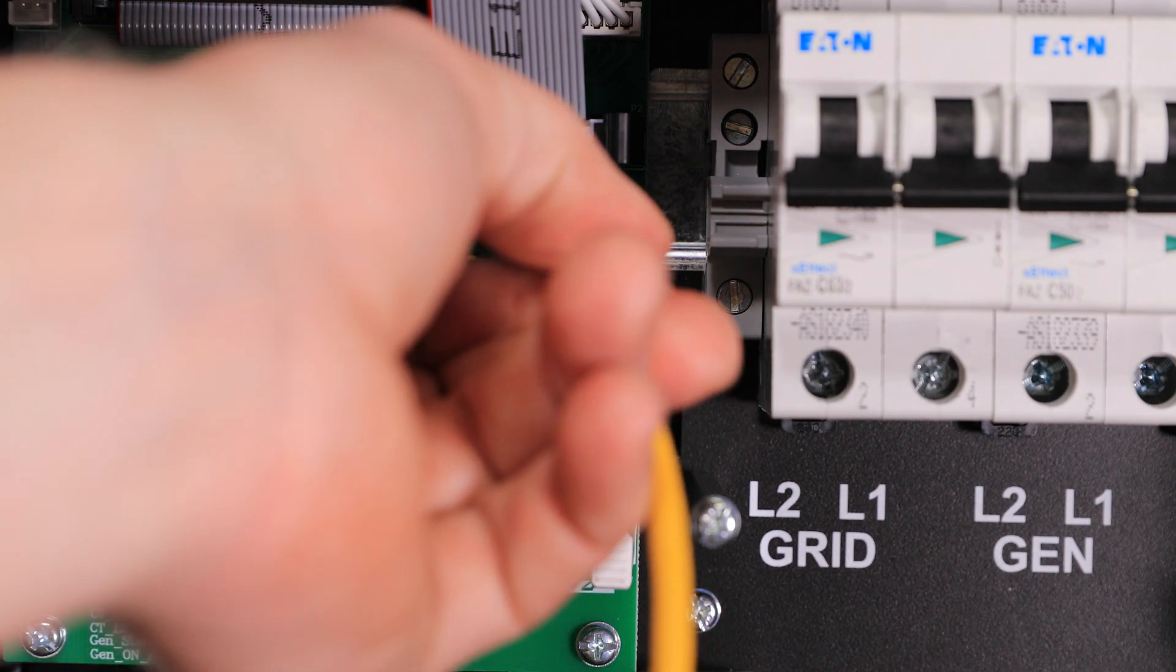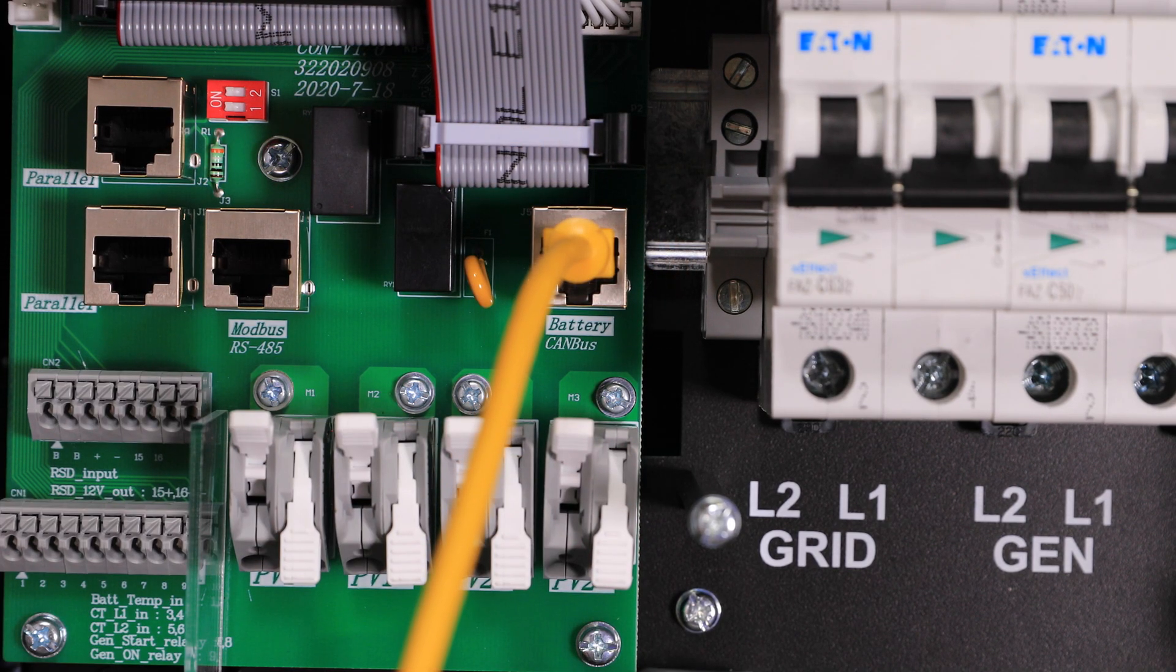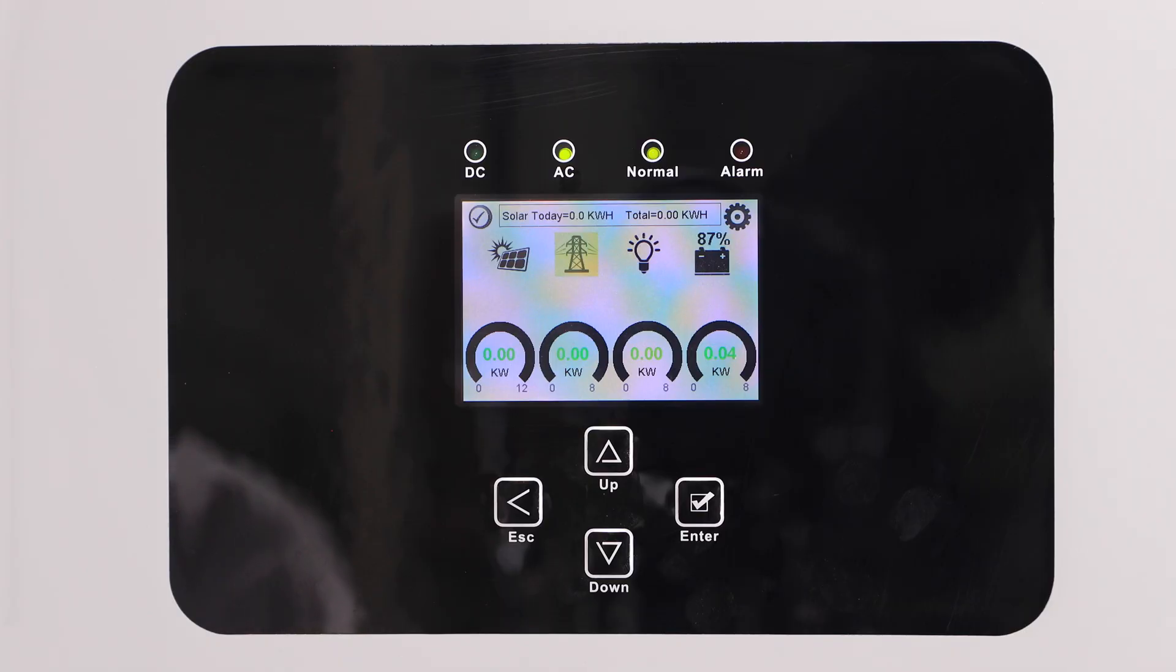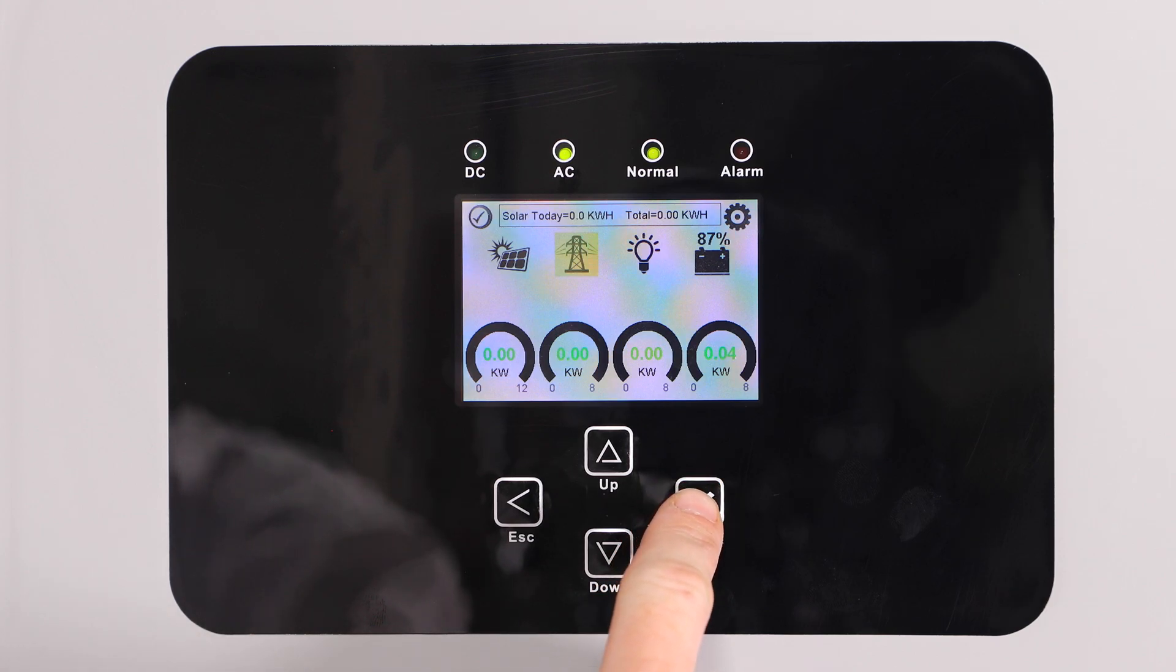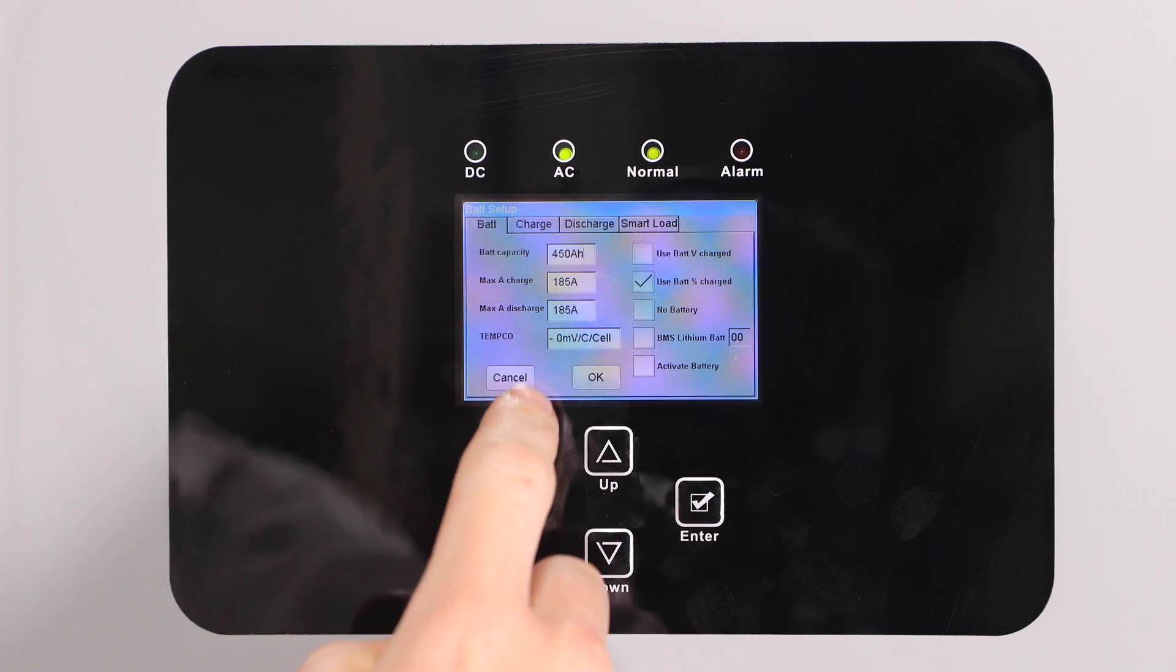This concludes the communications wiring, so next we'll adjust the settings on the LCD screen of the solar converter to enable communications. First navigate to the system setup screen by pressing enter and then click on the battery setup tab.